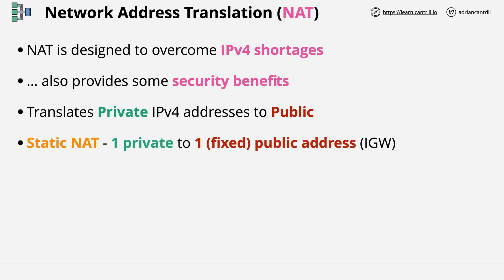First, we've got static NAT, which is where you have a network of private IPv4 addresses and can allocate a public IPv4 address to individual private IP addresses. The static NAT device translates from one specific private address to one specific public address, in effect giving that private address access to the public internet in both directions. This is how the internet gateway within AWS works. Static NAT is used when certain specific private IP addresses need consistent internet access using a public IP.